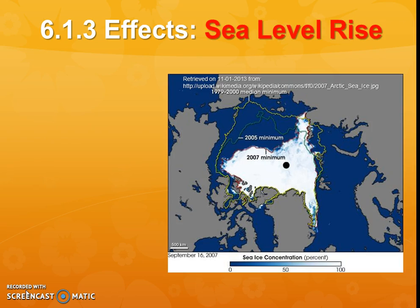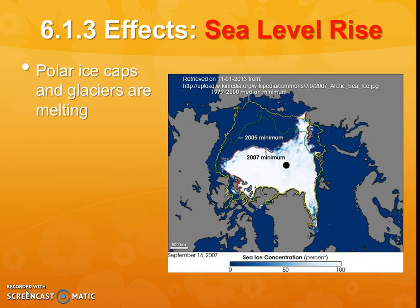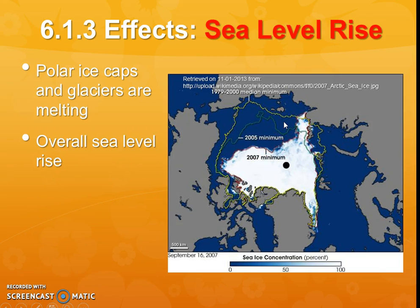The first thing that temperature rising would do is it's going to really impact the sea level, and specifically it's going to cause it to rise. A lot of that's going to be due to the fact that polar ice caps and glaciers are melting, as we can see from some of these visuals, and with that there's going to be an overall sea level rise.